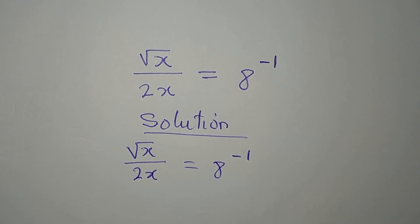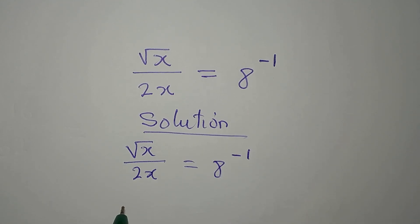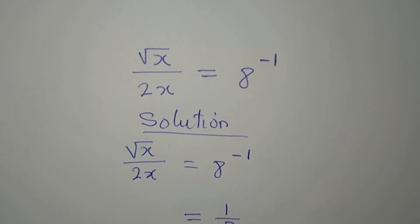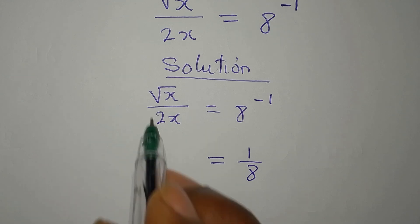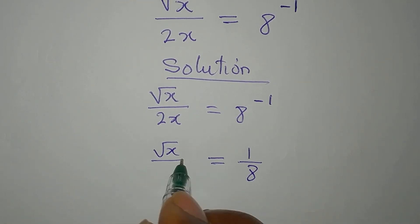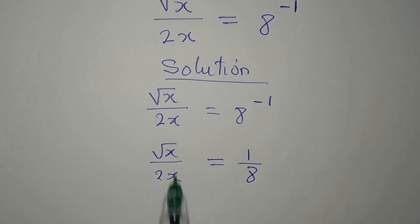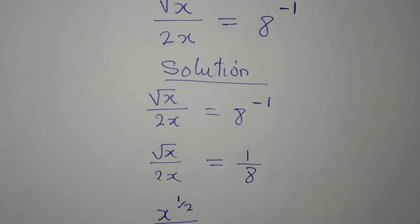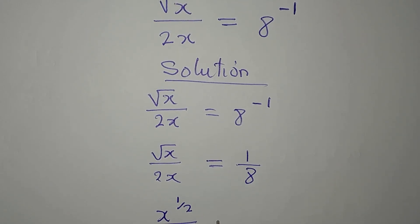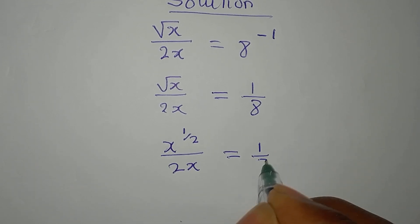The first method: we can rewrite 8 to the power of negative 1 as 1 over 8, according to one of the laws of indices. So we have square root of x over 2x, which is x to the power of 1 over 2, over 2x, and this is equal to 1 over 8.